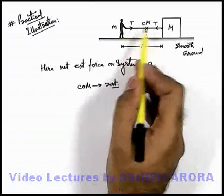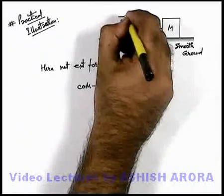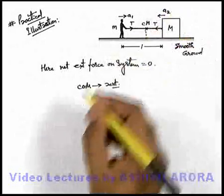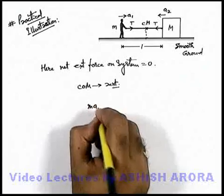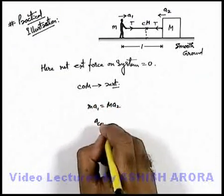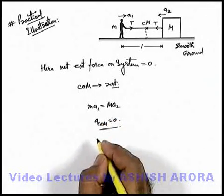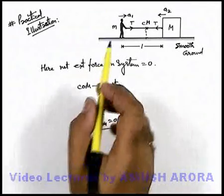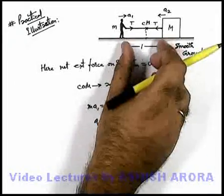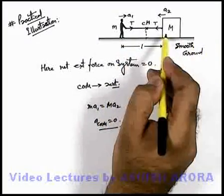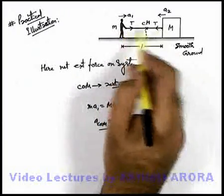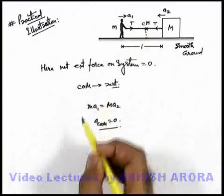Because equal and opposite forces are acting, the boy accelerates with acceleration a₁ and the mass accelerates with acceleration a₂. So here we can state that small m times a₁ must be equal to capital M times a₂, because the net acceleration of the centre of mass will be equal to zero. In this situation the boy as well as the block will be displaced — since the ground is smooth and external force is zero, both will be displaced — and they'll move in such a way that when the block reaches the boy, they are going to meet at the centre of mass.